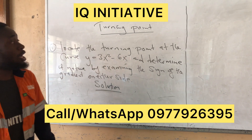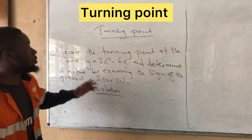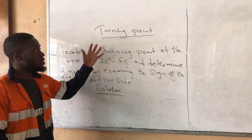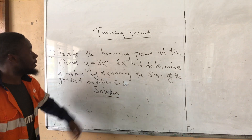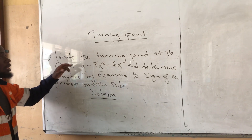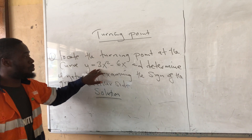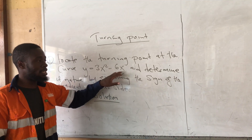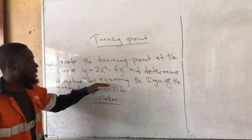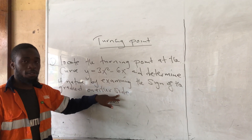Welcome to IQ Online Classes. Today we are going to do turning points. This is calculus differentiation applications. The first question is: locate the turning point on the curve y equals 3x squared minus 6x, and determine its nature by examining the sign of the gradient on either side.